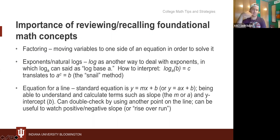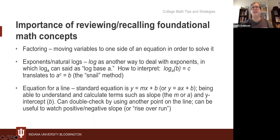One more thing: rise over run — if your slope is three-fourths, three is your rise and four is your run. That means from a point on the graph you go up three and then to the right four. So rise over run is more of a y over x situation, really thinking about it in those terms.